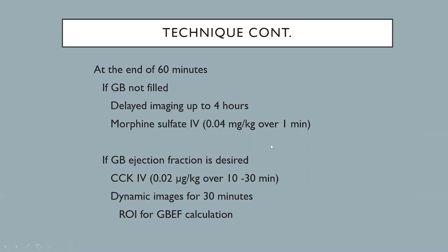If the gallbladder shows up, gallbladder ejection fraction can be obtained to evaluate for biliary dyskinetic syndrome. For the gallbladder ejection fraction portion of the exam, we give IV cholecystokinin, slowly infused over 10 to 30 minutes, and additional imaging is acquired for 30 minutes. Then a region of interest is placed over the gallbladder and the gallbladder ejection fraction is calculated.